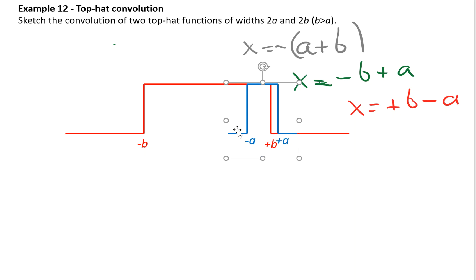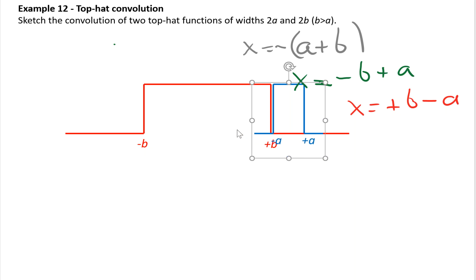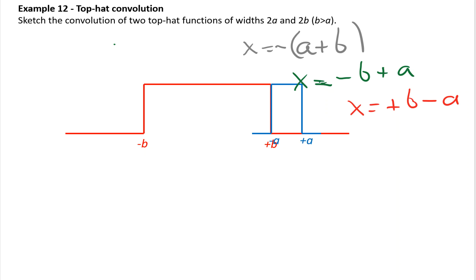We're now in the regime where the overlap between the two functions is decreasing, and it falls in a linear fashion. At the far end, x is equal to plus b plus a. So in summary: the convolution is zero below x equals minus (a plus b); it increases linearly to x equals minus b plus a; it stays constant to x equals b minus a; then it ramps down to zero at x equals plus b plus a. For x greater than these values the convolution is zero.